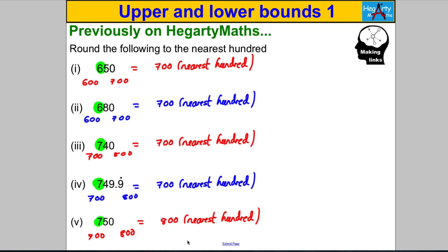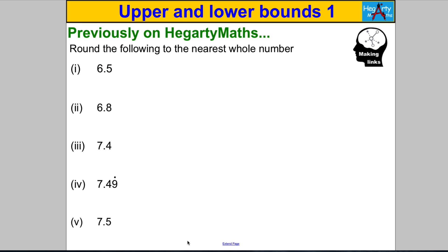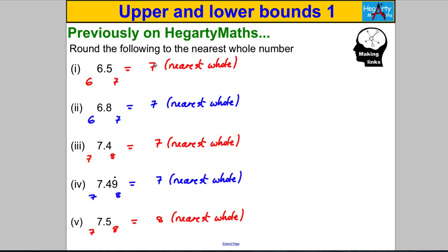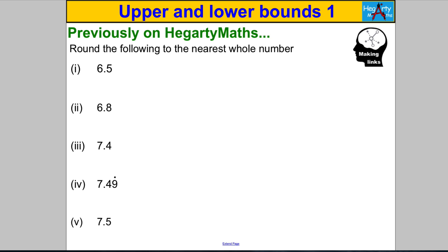Have a go at another set — round the following to the nearest whole number, pause and have a go. Here are the answers: the first rounded to 7, so did the second, so did the third, so did the fourth, and the fifth actually rounded to 8 because it was seven point five.